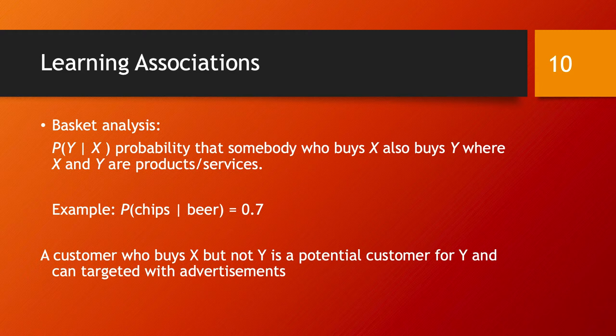What else should you expect in addition to the behavior you have observed? To make this more concrete, you are in a shop and you would like to learn associations of the type: customers who buy product X typically also buy product Y. If some customers only bought X and not Y, they are potential Y customers according to your association rule, and they can be subject to targeted advertisement.